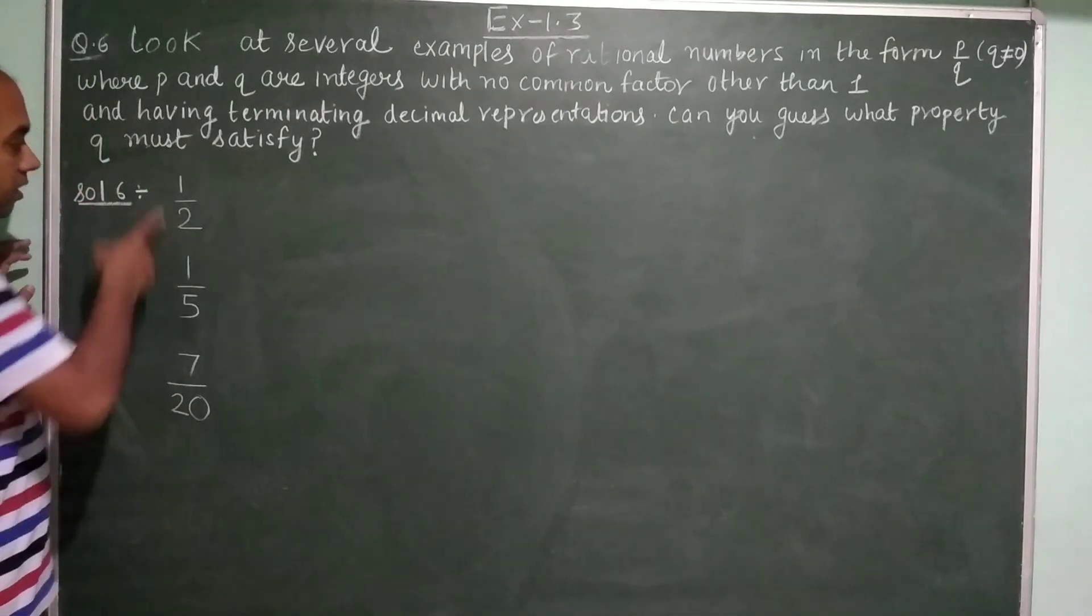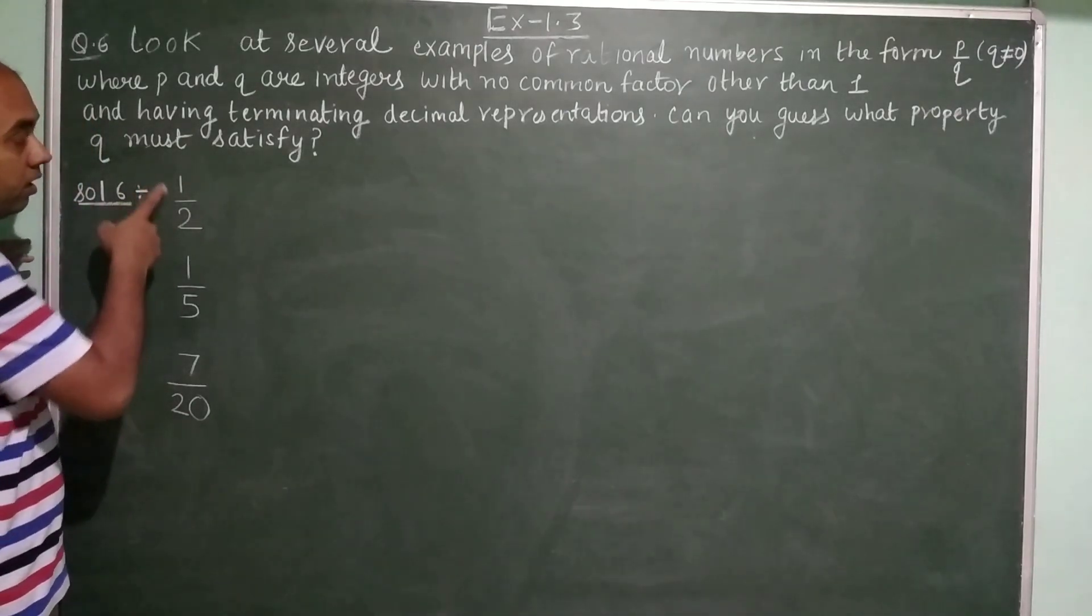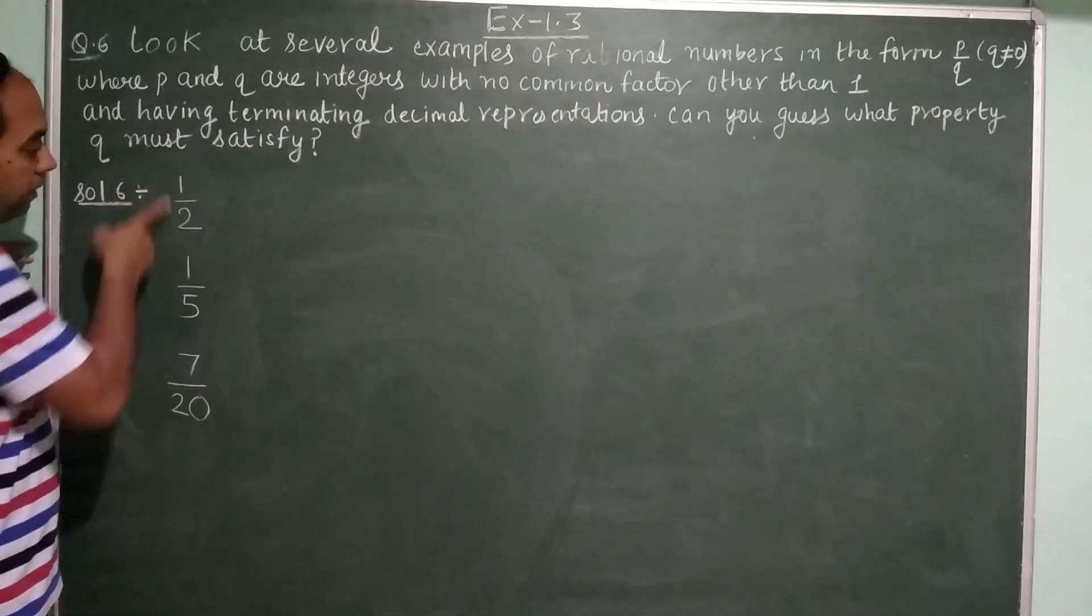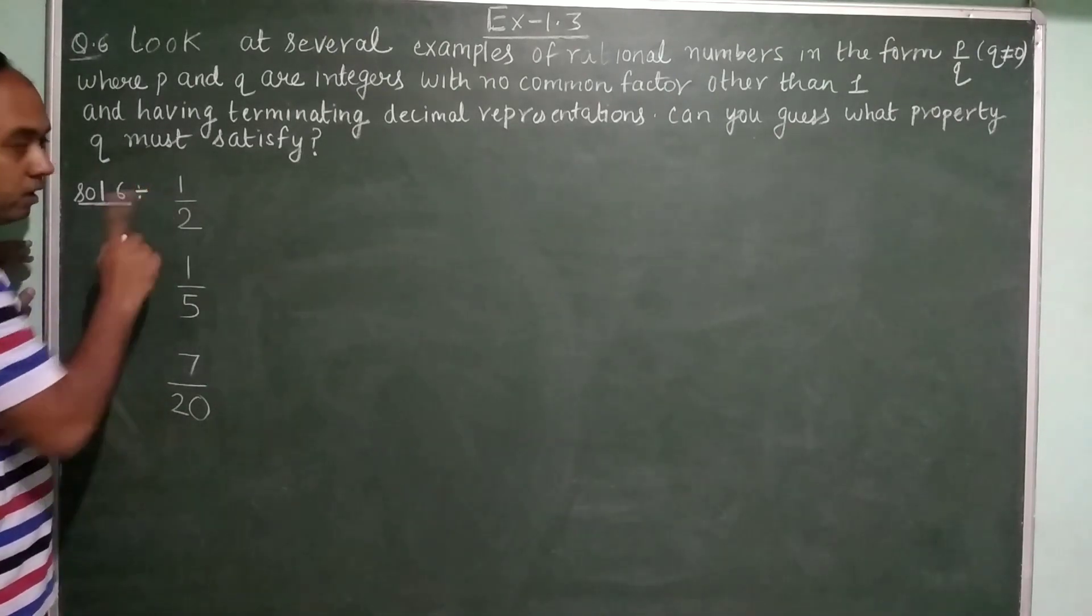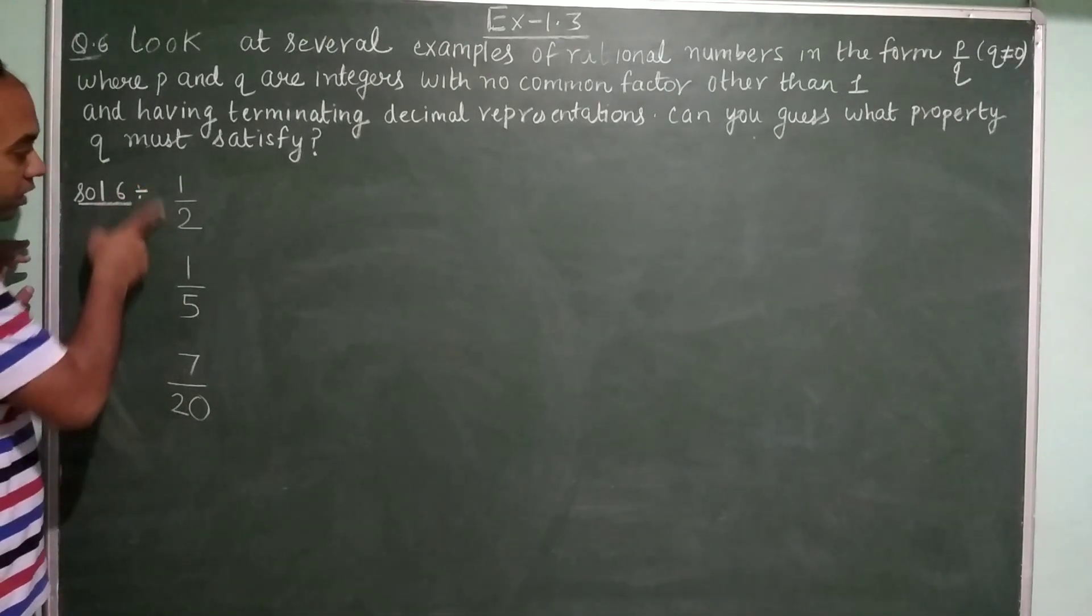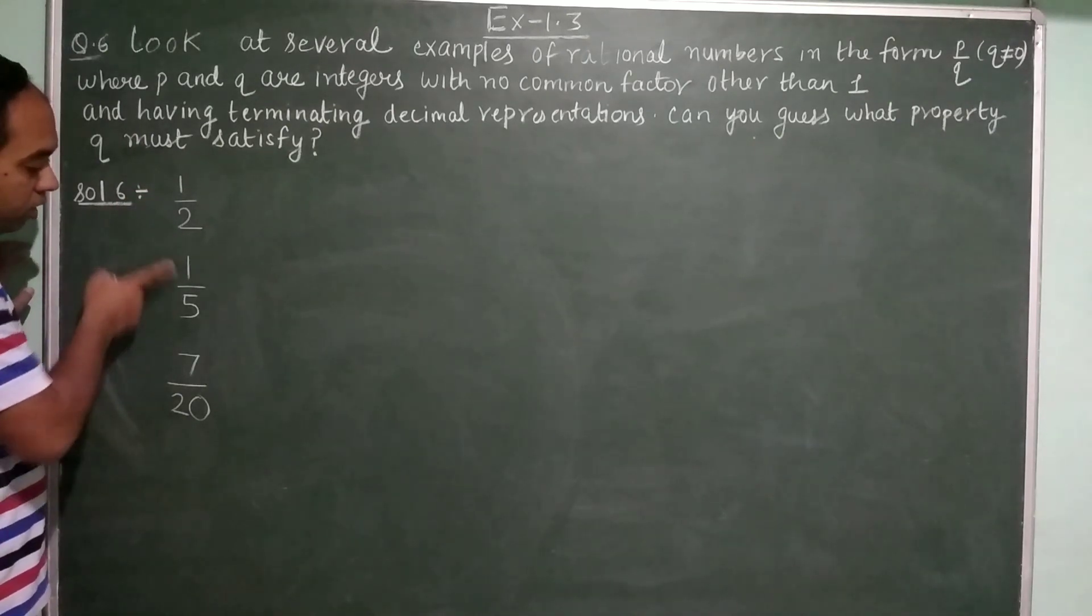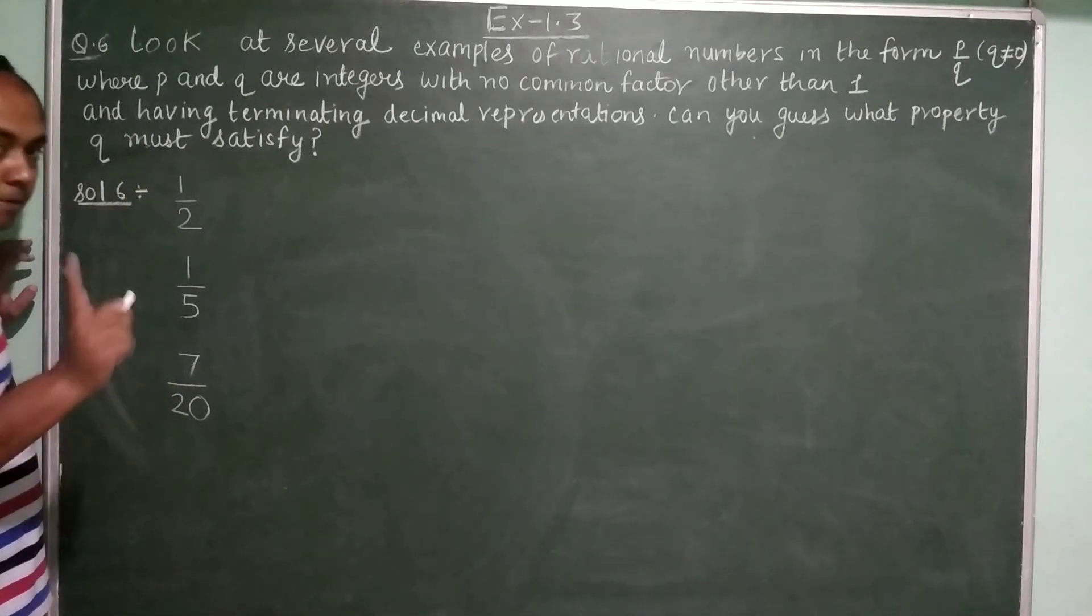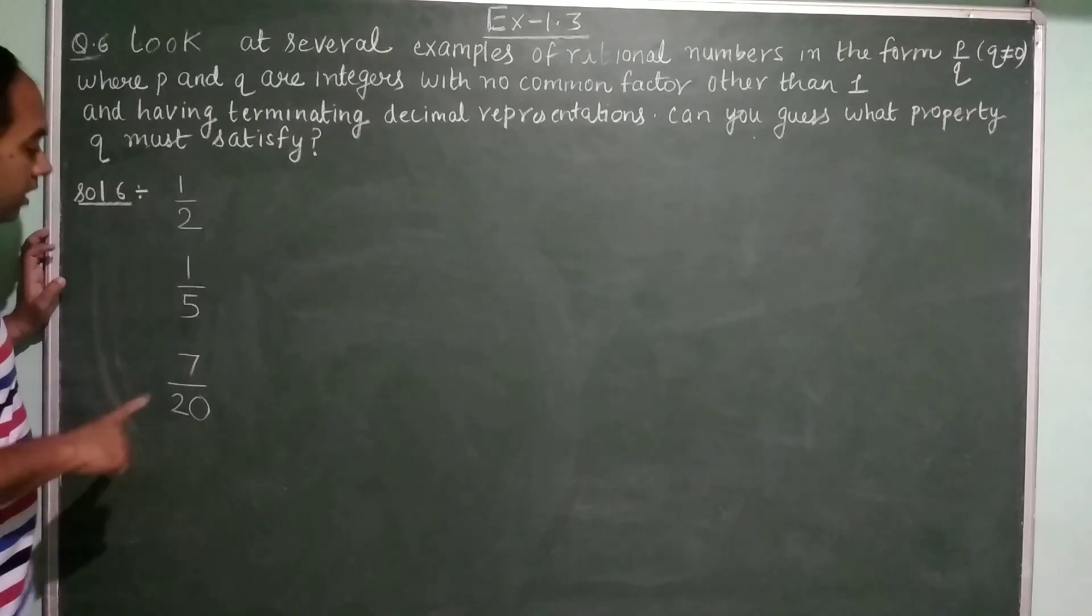Now these are the rational numbers where both p and q have only one common factor, that is 1. You can check it over here, the common factor is 1 in each case.